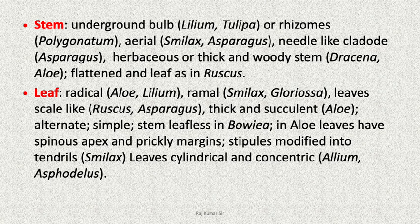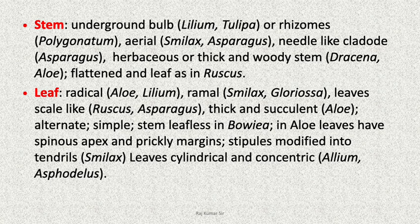Leaves are radical in Aloe and Lilium, ramal in Smilax and Gloriosa, scale-like in Ruscus and Asparagus, thick and succulent in Aloe vera, alternate, simple. The stem is leafless in Bowiea. Aloe leaves have a spinous apex and prickly margins. Stipules are modified into tendrils in Smilax. Leaves are cylindrical and concentric in Allium and Asphodelus.